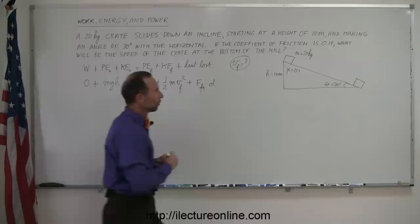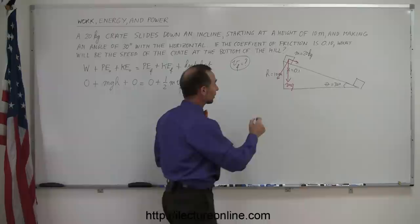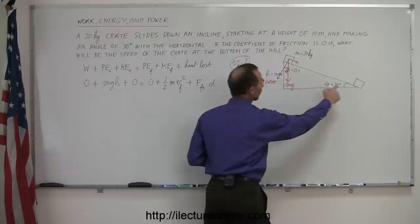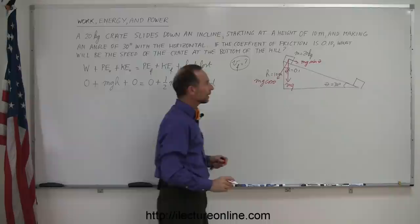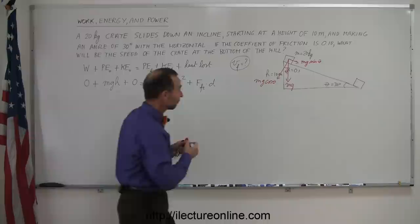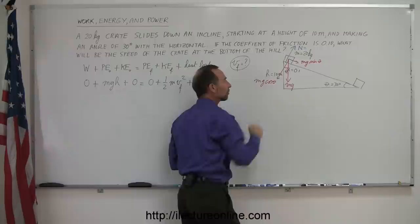The weight of the crate, which is straight down — mg — can be written into the perpendicular component and the horizontal component relative to the incline. The perpendicular component would be mg cosine theta, because this angle theta is the same as the angle on the incline. The horizontal component is mg sine theta — that's the force pulling the crate down the incline. The normal force is always equal and opposite to the perpendicular component of the weight, so the normal force is equal to mg cosine theta.